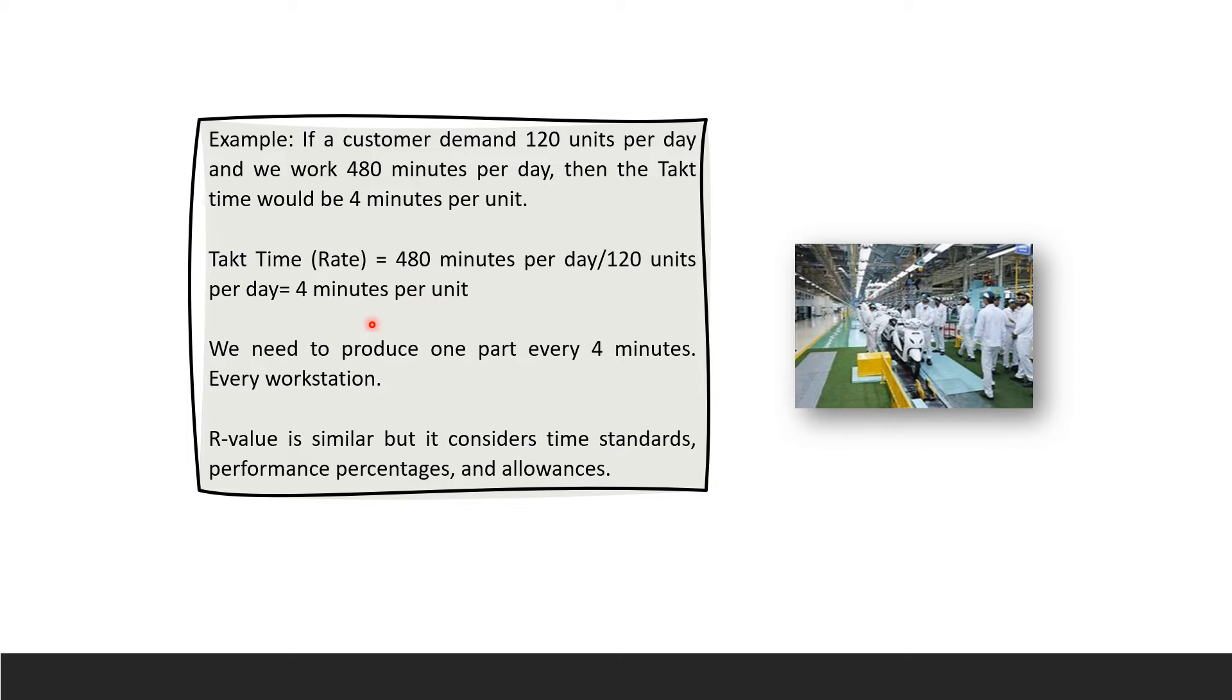Everything that is per is a rate. 4 minutes per unit means one unit you have to make in 4 minutes. That's your station, same as your buddy's station next to you and the station after that. We need to produce one part every four minutes at every workstation.